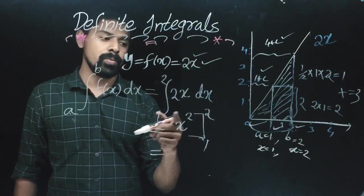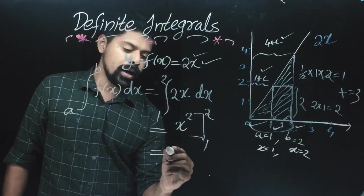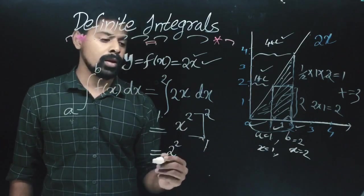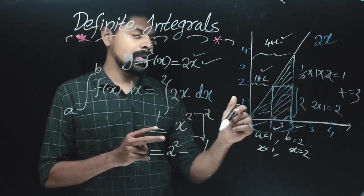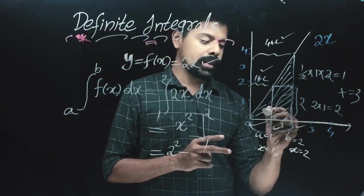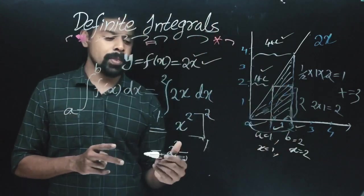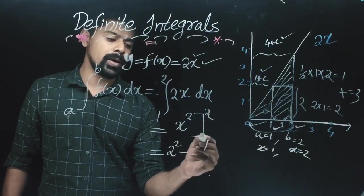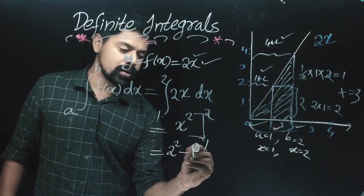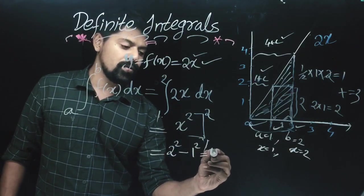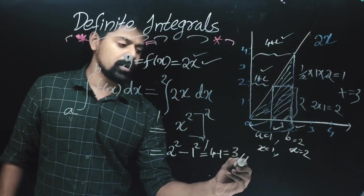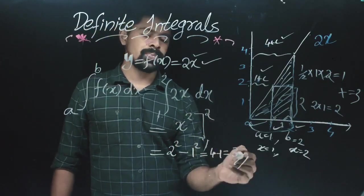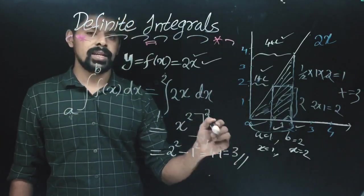We substitute the upper boundary: 2 squared minus the lower boundary: 1 squared. That is 4 minus 1, which equals 3. So the integral of 2x dx from 1 to 2 is equal to 3. This is the definite integral result.